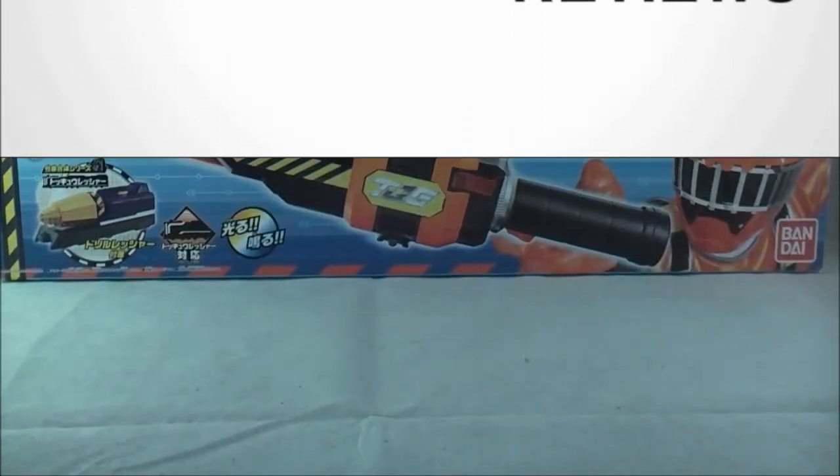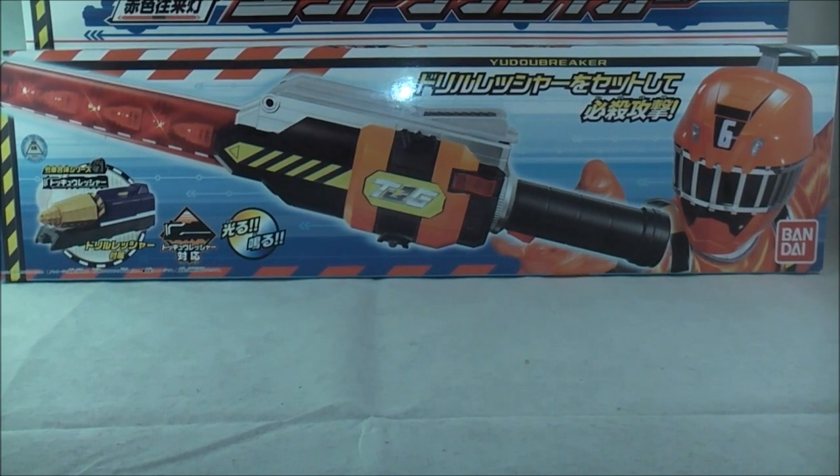Hey YouTube, Dawson Rider here with a review of the Yudo Breaker from Ressha Sentai Tokyuger. This is Tokyo Rokugo's main weapon in the show. We're going to take a very quick look at the packaging before we bring the actual toy in.